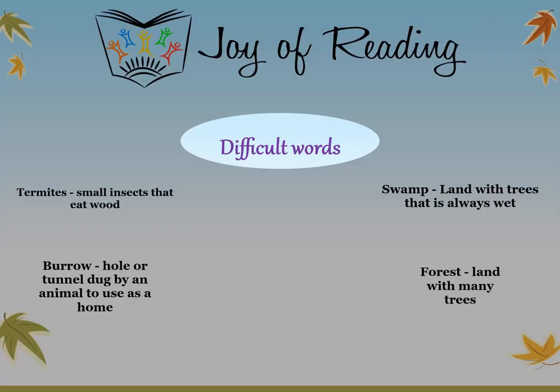The difficult words in this story are: termites — small insects that eat wood; burrow — a hole or tunnel dug by an animal to use as a home; swamp — land with trees that is always wet; forest — land with many trees.